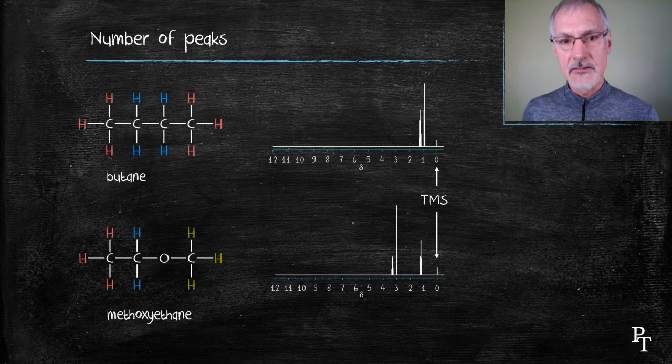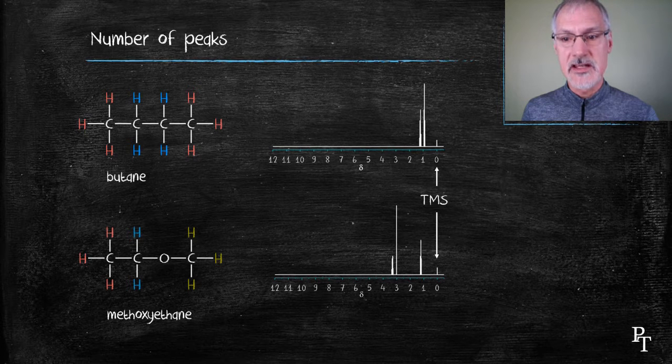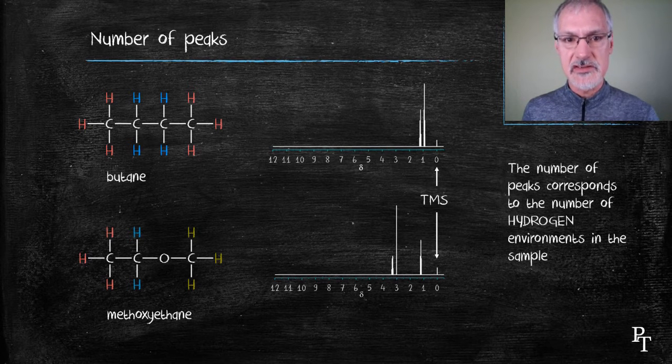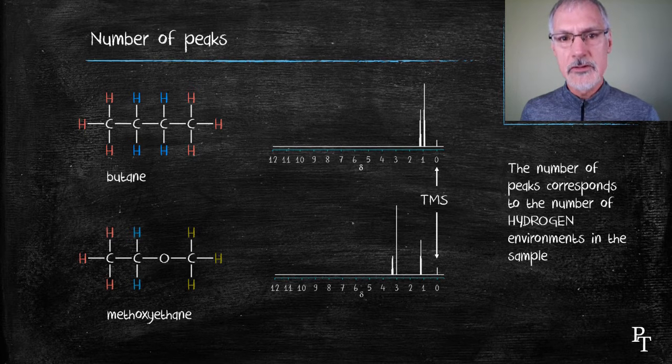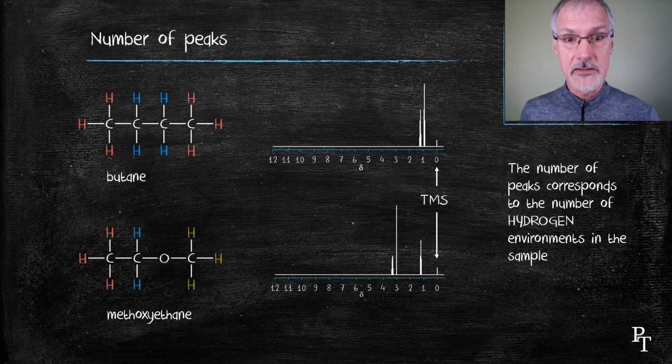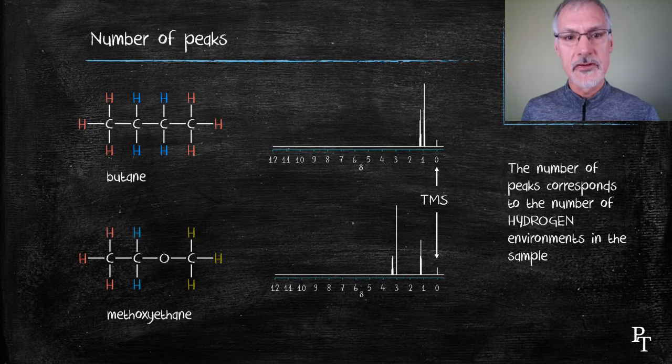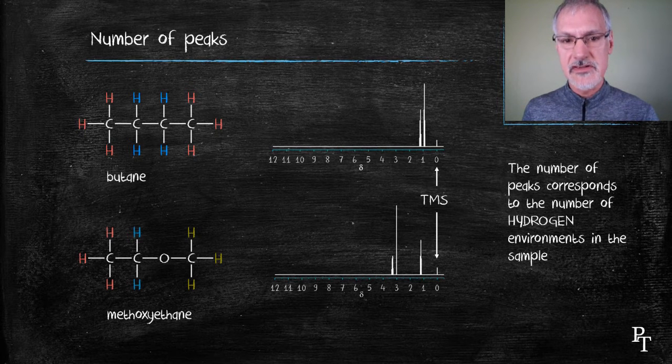Notice again, I have a little bit of the sample to which all others are compared, the TMS. That generates the peaks that you see at zero. So generally speaking, the number of peaks that you see, not counting the one at zero, corresponds to the different numbers of hydrogen environments that are in your sample.